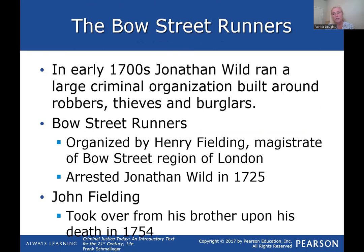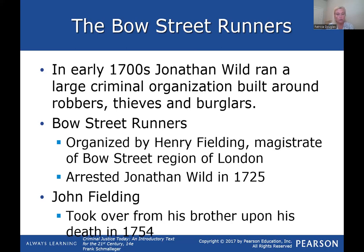In the early 1700s, a man named Jonathan Wilde ran a large criminal organization with robbers, thieves, and burglars — he'd have them steal goods and then sell them. It really was an organized crime situation. What was formed to take care of it were the Bow Street Runners. Henry Fielding, a magistrate in the Bow Street region of London, came in and basically broke up that ring, arresting Jonathan Wilde in 1725. The Bow Street Runners became the best that London had to offer.